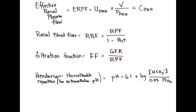What is the equation of the renal blood flow? The equation of renal blood flow is the renal plasma flow over 1 minus the hematocrit.